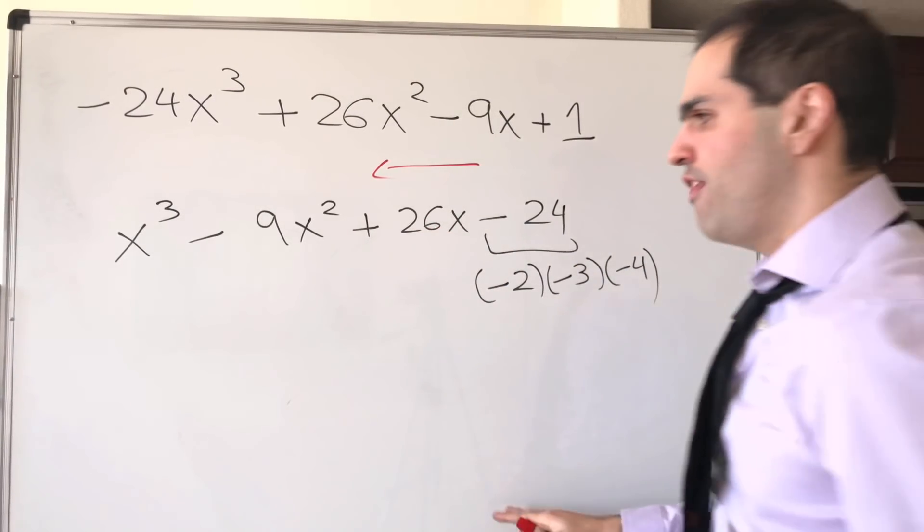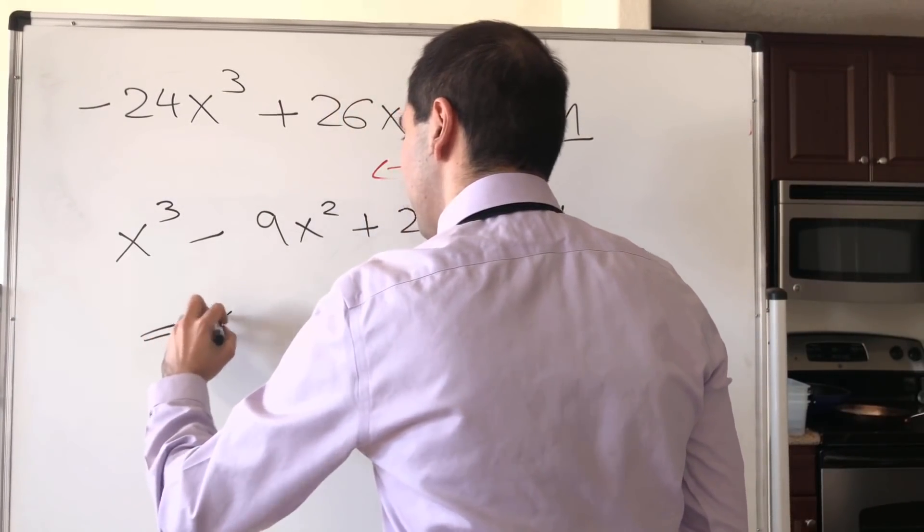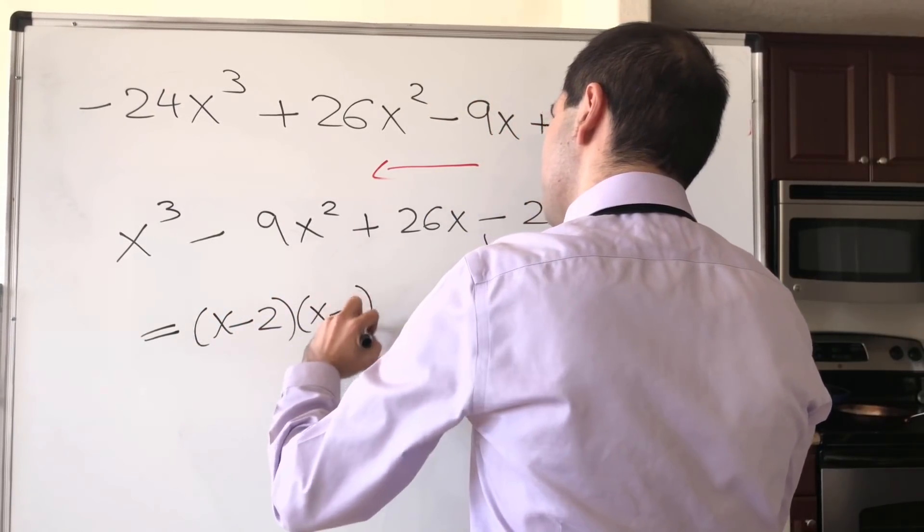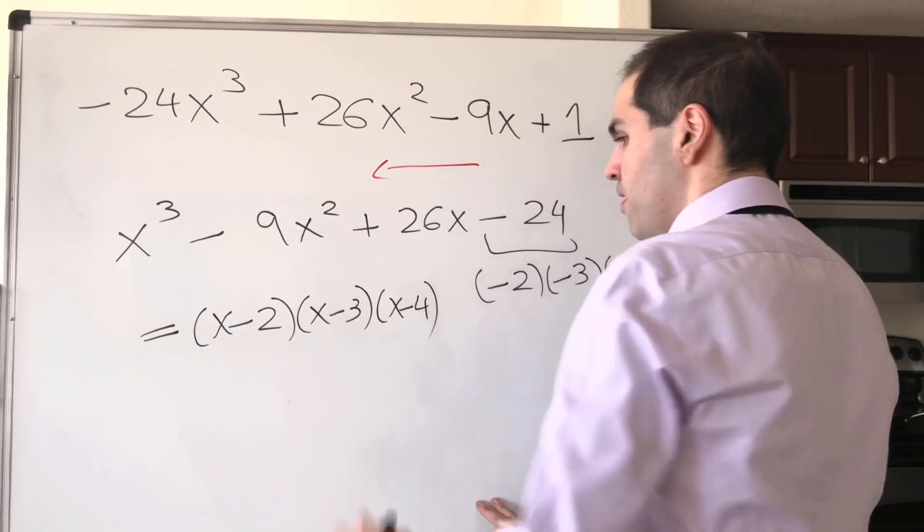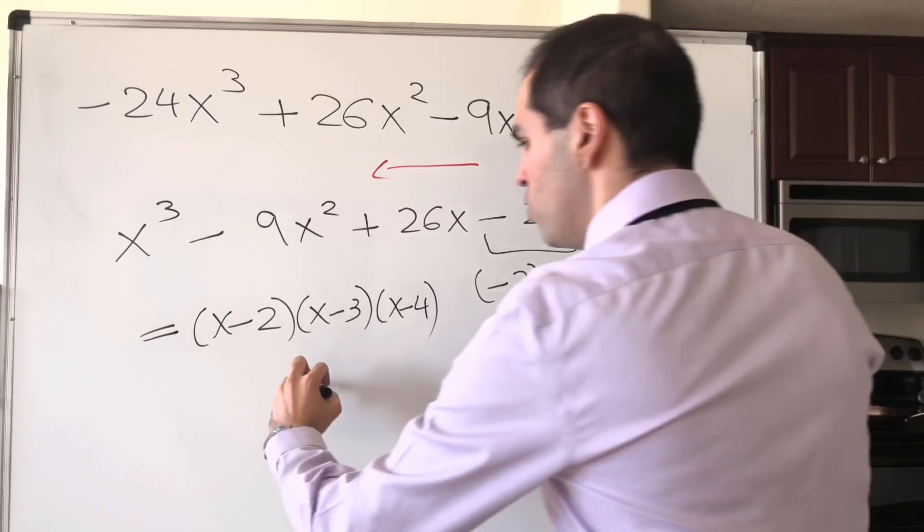And therefore, you can factor this out as x minus 2 times x minus 3 times x minus 4, which therefore has roots 2, 3, 4.